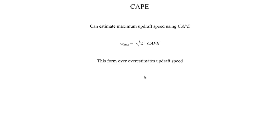Remember that we made some assumptions when deriving the buoyancy equation, and the buoyancy equation is what we use to calculate CAPE. In practice, using conservation of energy — kinetic energy equals potential energy — doesn't work very well. A more empirical and accurate representation is to take the square root of 2 times CAPE and then divide that number by 2, which is usually a better estimate of the updraft speed.